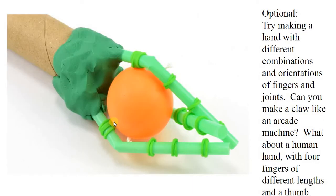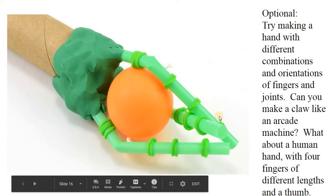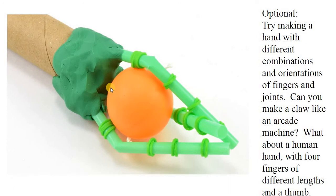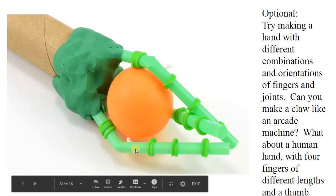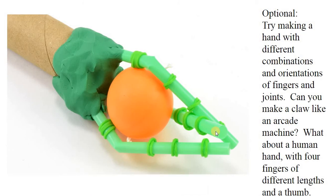This is another option. See if you could try to add different combinations and orientations of these fingers here. See if you can make a claw like you see in those arcade games where you try to pull out a stuffed animal from the big old drum or container that it has. Can you make a hand that looks like a human hand with four fingers of different lengths and a thumb? So try to modify the design as you see fit or keep it this way and see how you can modify this to lift heavy objects. But that's your challenge for the week.